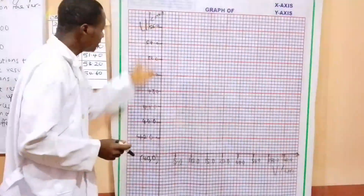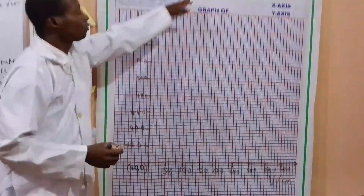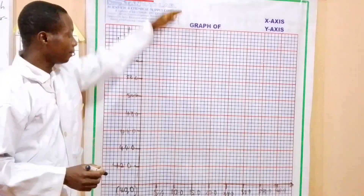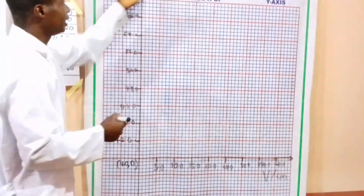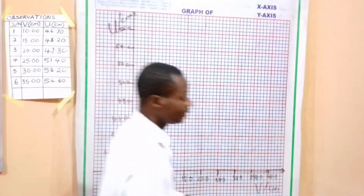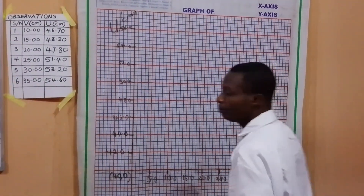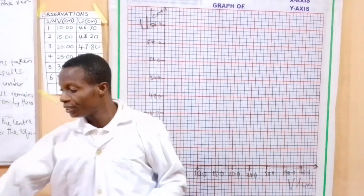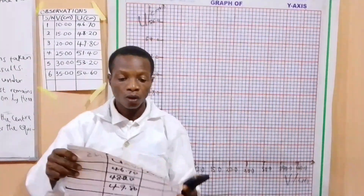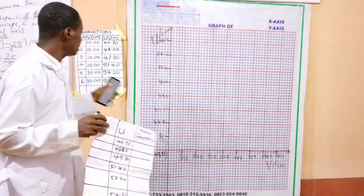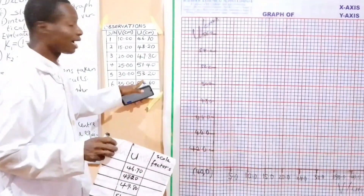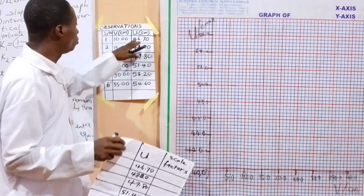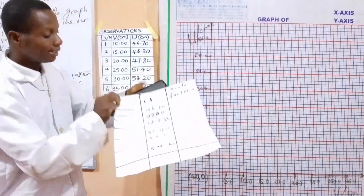So this is the scale we have chosen. We're going to write the title and scale here, but let's finish the graph first. Please pay accurate attention to this. To plot your graph, you do not need to follow the fractions directly — look for the scale factor. We are going to calculate the scale factor for the U-axis. For the V-axis we don't have any problem because the values are already there.